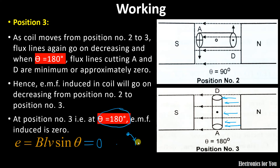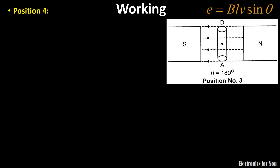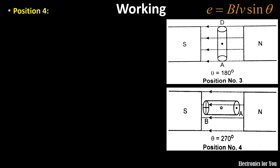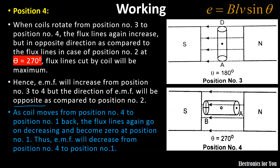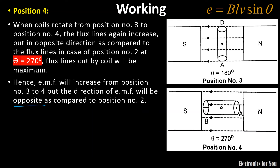From position 3, if we move to position 4 at 270°, the coil again cuts the maximum lines of force. However the EMF induced is now maximum in the opposite direction. Using our formula E = BLV sinθ, and since sin 270° = −1, the EMF induced is −BLV, that is maximum with a negative sign.